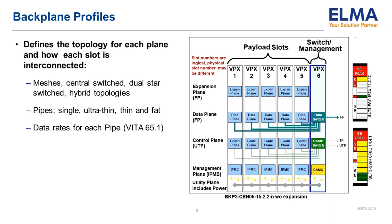For instance, the utility plane is always shown at the bottom in the drawing but is actually found at the very top of each physical slot. Each relevant topology drawing as well as detailed information on port mappings and related rules and permissions are found in the VITA 65.0 backplane profile chapters. The bandwidth and any other special connector configurations for each backplane are found in VITA 65.1.